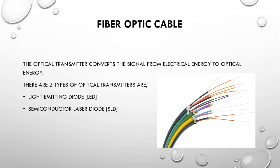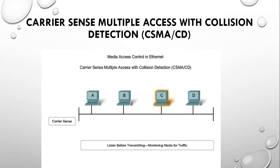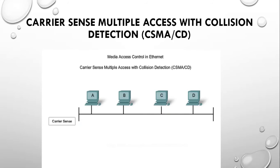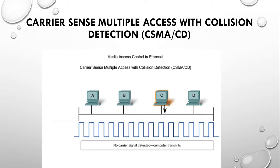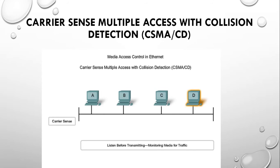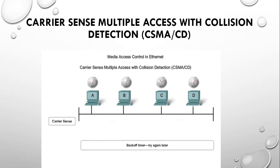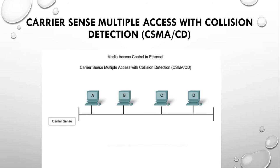Carrier sense multiple access with collision detection (CSMA/CD) is mostly used in wired networks. A station senses the medium to check whether there is traffic. If the medium is not idle, the station waits. When it detects the medium is idle, it sends data. After sending a frame, it checks whether transmission was successful. If a collision occurs, the frame is sent again.